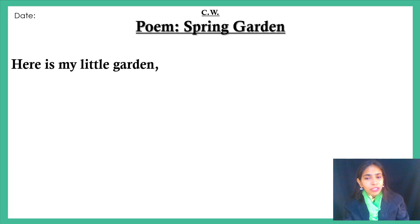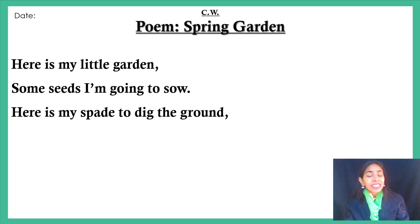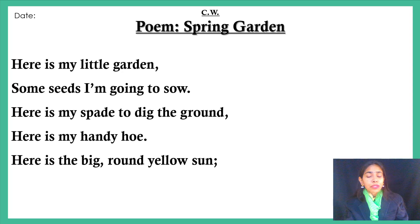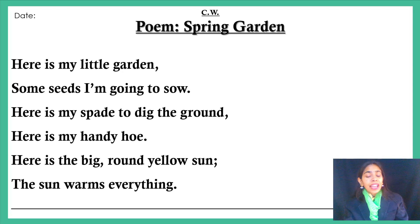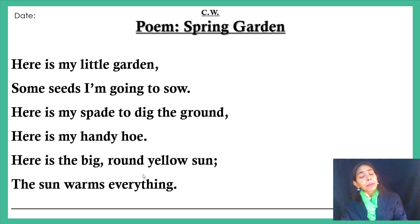Let me tell you about the Spring Garden poem. Here is my little garden, some seeds I am going to sow. Here is my spade to dig the ground. Here is my handy hoe. Here is the big round yellow sun. The sun warms everything. I have told you to learn minimum six lines. Any of these six lines can come in the exam, so you must learn all six lines.